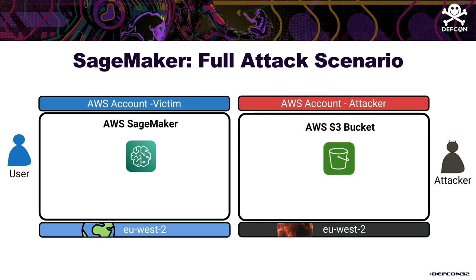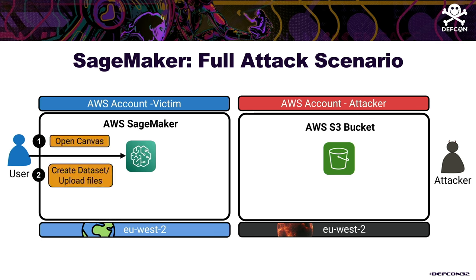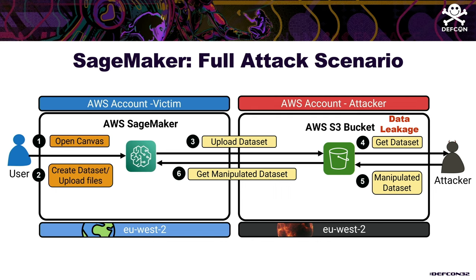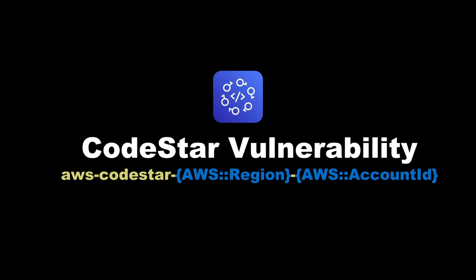When the user opens Canvas and creates a dataset, the files are uploaded to the attacker's S3 bucket in the background. The attacker can retrieve the dataset — causing data leakage. If that's not enough, the attacker can also manipulate the dataset, causing SageMaker to train on manipulated data, leading to inaccurate models — all without the user knowing anything has changed.